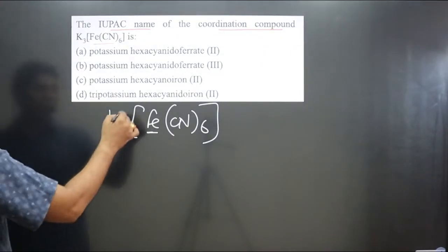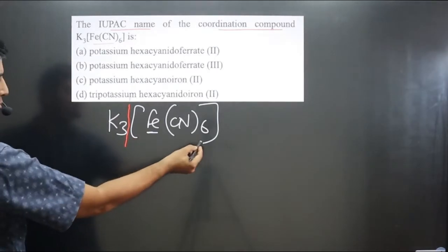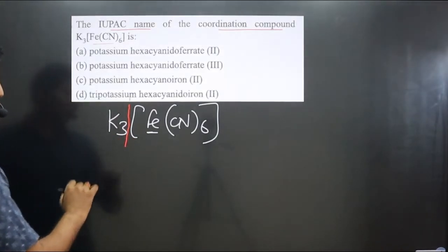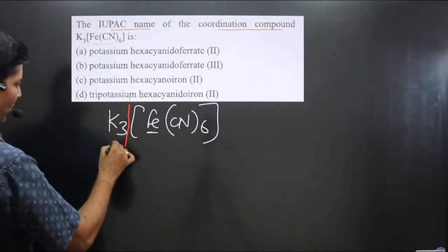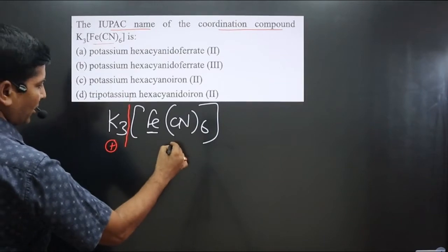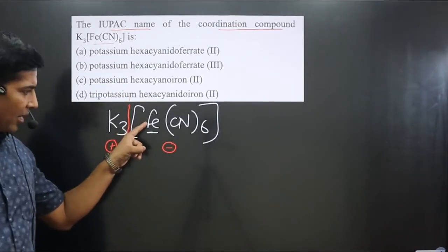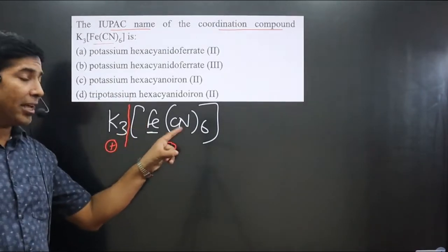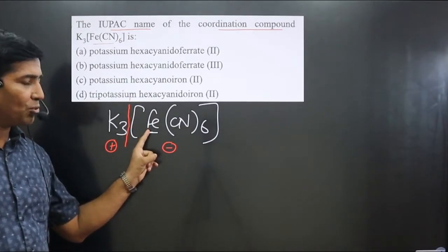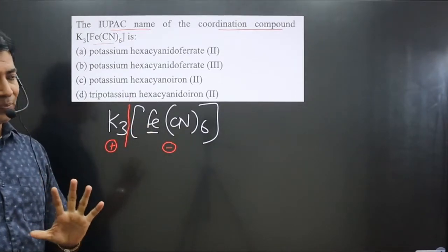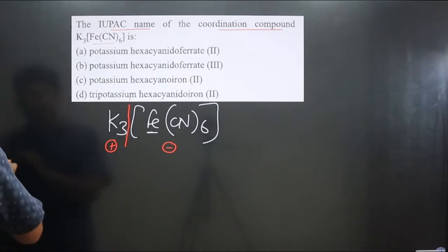If we break this complex — we can break it here because the close bracket portion cannot be broken — the first part is positive and the second part will be negative. You can see this central element is present in the anionic complex, so we have to use its special name.